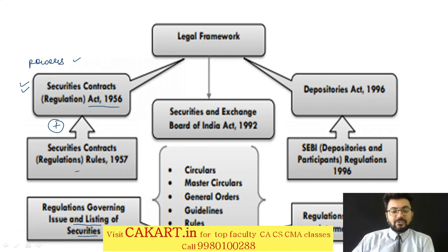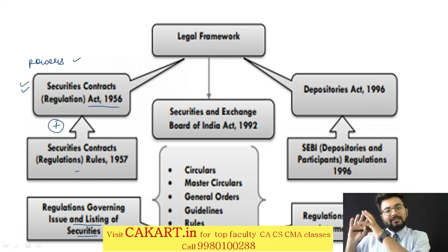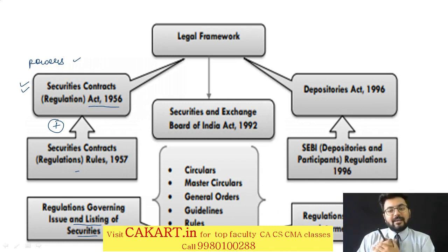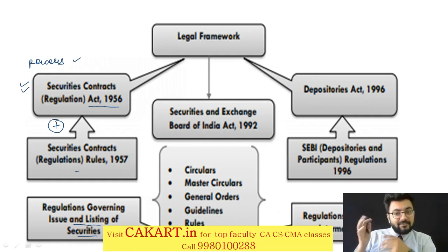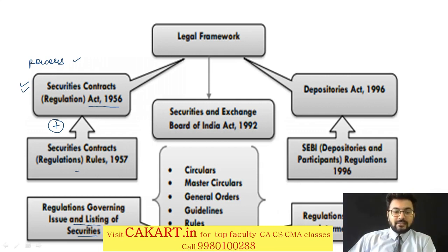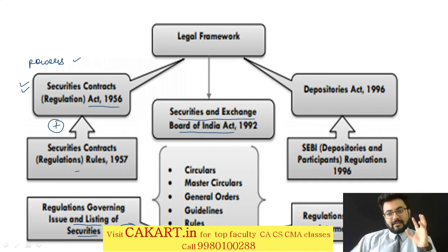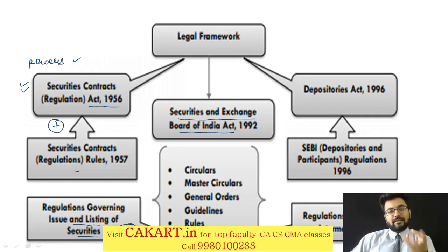After that we will talk about the case of Subrata Roy Sahara, governing issue and listing of securities, how you can issue and list securities. Listing of securities means when a company comes forward with a public issue, they are going to list at a stock exchange. Then the next important authority is SEBI, one of the most prominent authorities in India when it comes to listed companies. When it comes to listed companies, everything is governed by SEBI. When it comes to an unlisted company, that is governed by Company Law itself.